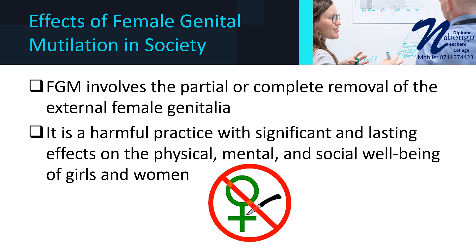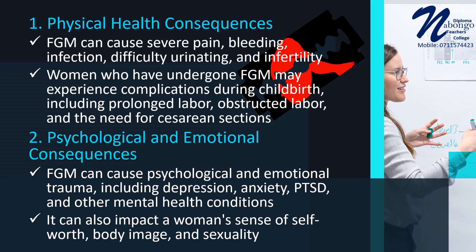Effects of Female Genital Mutilation in Society: Female Genital Mutilation (FGM), also known as female circumcision, is a practice that involves the partial or complete removal of the external female genitalia. FGM is a harmful practice with significant and lasting effects on the physical, mental, and social well-being of girls and women. Number 1 — Physical Health Consequences: FGM can cause a range of physical health consequences, including severe pain, bleeding, infection, difficulty urinating, and infertility. Women who have undergone FGM may also experience complications during childbirth, including prolonged labor, obstructed labor, and the need for caesarean sections.